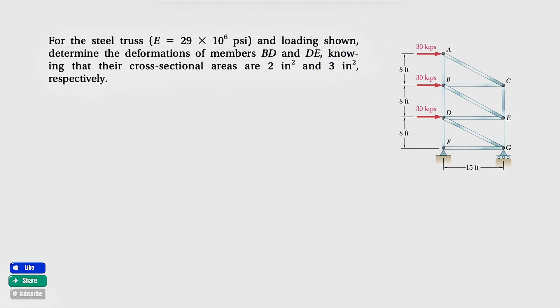We need to determine the deformations of members BD and DE, knowing that the cross-sectional areas are 2 inches squared and 3 inches squared respectively. We solved a similar question in the previous video. What we need is to find the force in each of these two members, and our deformation would be pretty easy. We're going to have this formula: force times length over the area times elastic modulus. Since we are dealing with the truss and are asked to find specific members, we can use the method of sections.